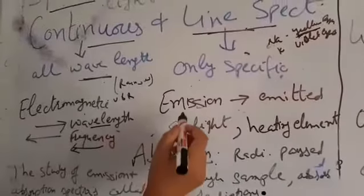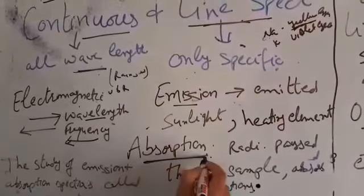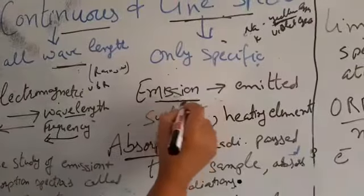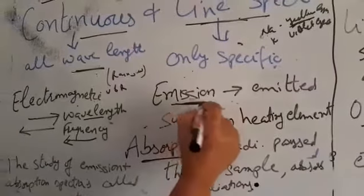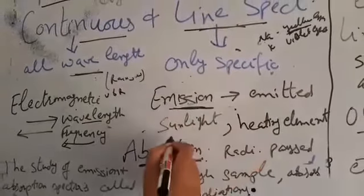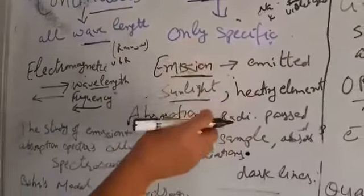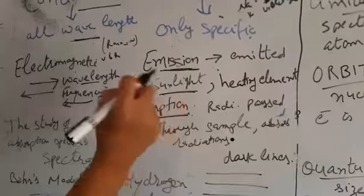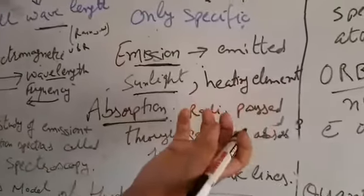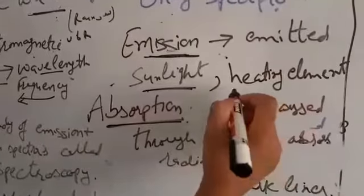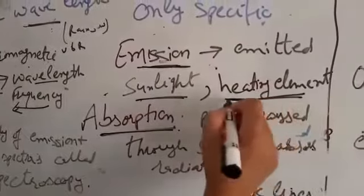Then this spectrum is of two types: emission spectrum and absorption spectrum. Emission spectrum means emission of light. When light is emitted, radiations are emitted. Like sunlight is an example of emission spectrum. When there is energy or radiant energy emitted. Like when we are heating any substance or any element that also emits light, emission spectrum.